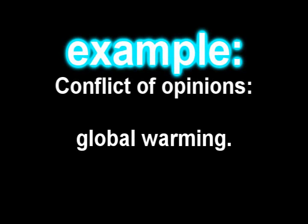Let's look at one possible example of a conflict of opinions: global warming. Two people disagree upon global warming — one believes it's a threat and the other thinks that it's not that big of a deal. These two must persuade each other that their position and ideas are correct and that the other arguer is incorrect. Person A must convince person B that they're incorrect and that person A is correct, and vice versa.